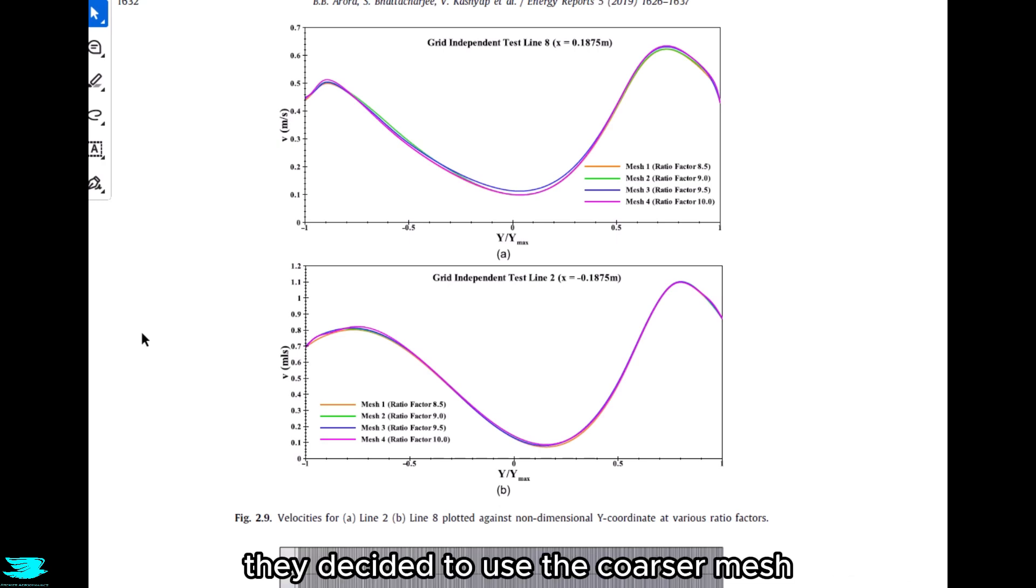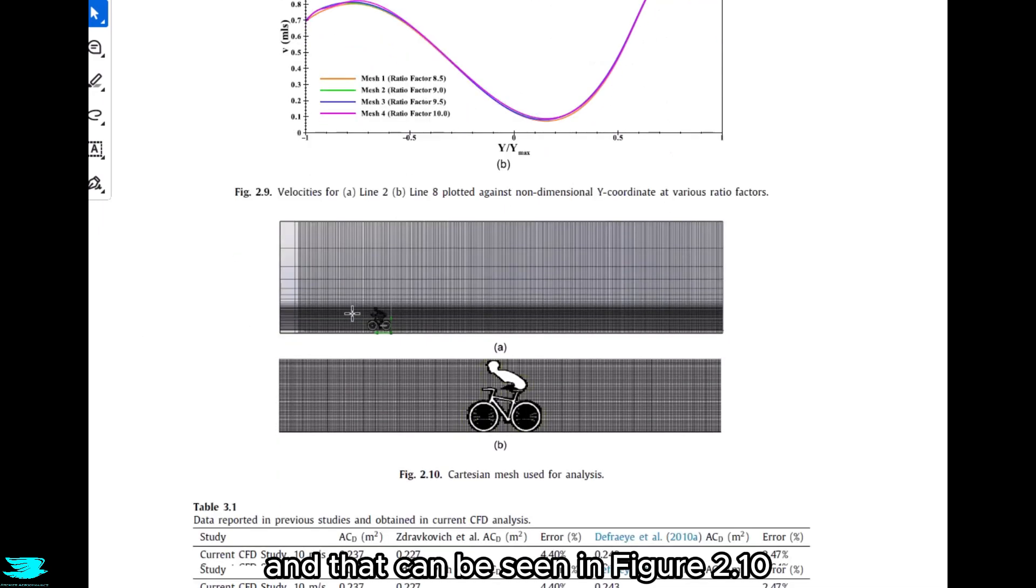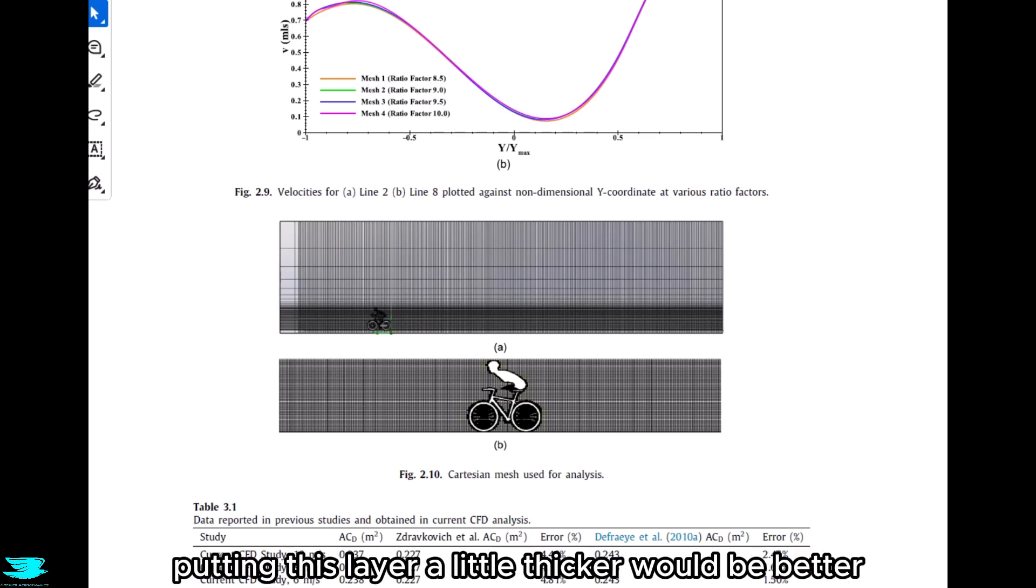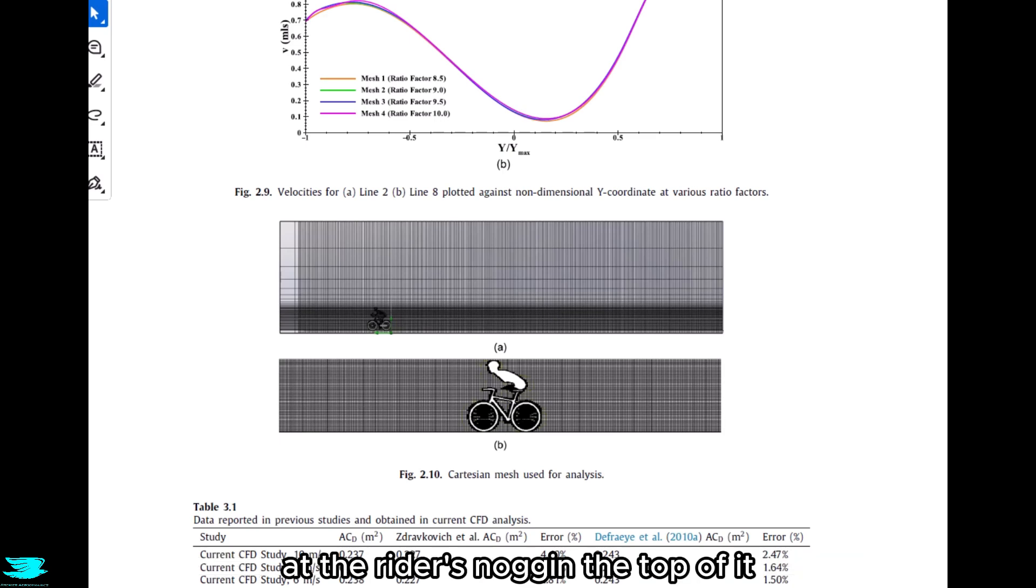Anyway, they decided to use the coarsest mesh, and that can be seen in figure 2.10. In the top plot in this figure, you can see that there's this layer of cells close to the ground, it's quite fine, and it encompasses the entire rider. But then, all of a sudden, the cells become quite a bit coarser. This to me is quite surprising. I would have thought that putting this layer a little thicker would be better, so the coarse mesh doesn't start all of a sudden at the rider's noggin, the top of it. So you get a bit of a buffer layer. But let's go to the validation study to see if the mesh was good overall.